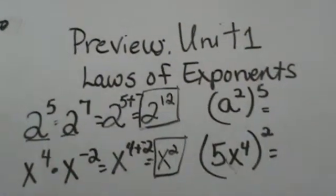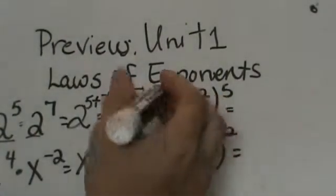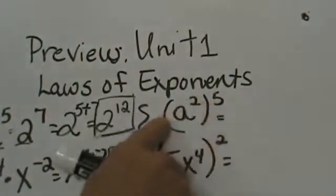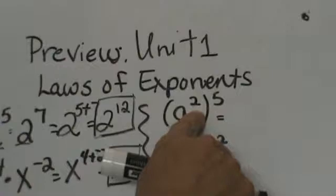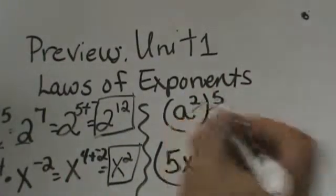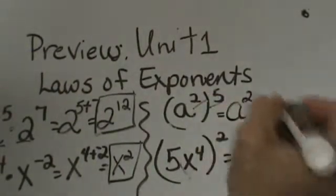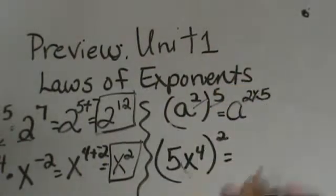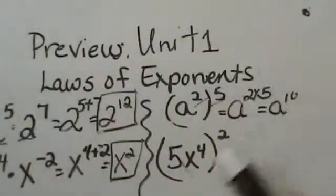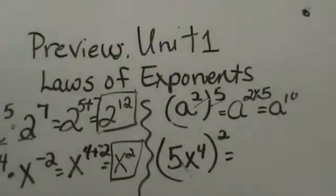When you have like bases you add exponents. If your bases are not alike you cannot combine the terms. Now let's look at an exponent on top of a term. Let's look at 2 squared to the 5th. When you are raising to an exponent, the rule is you multiply those exponents. So I am going to take the 2 and the 5th and multiply them together to get a to the 10th. I won't go over all the detail since this is just a review lesson and we have a lot to cover.